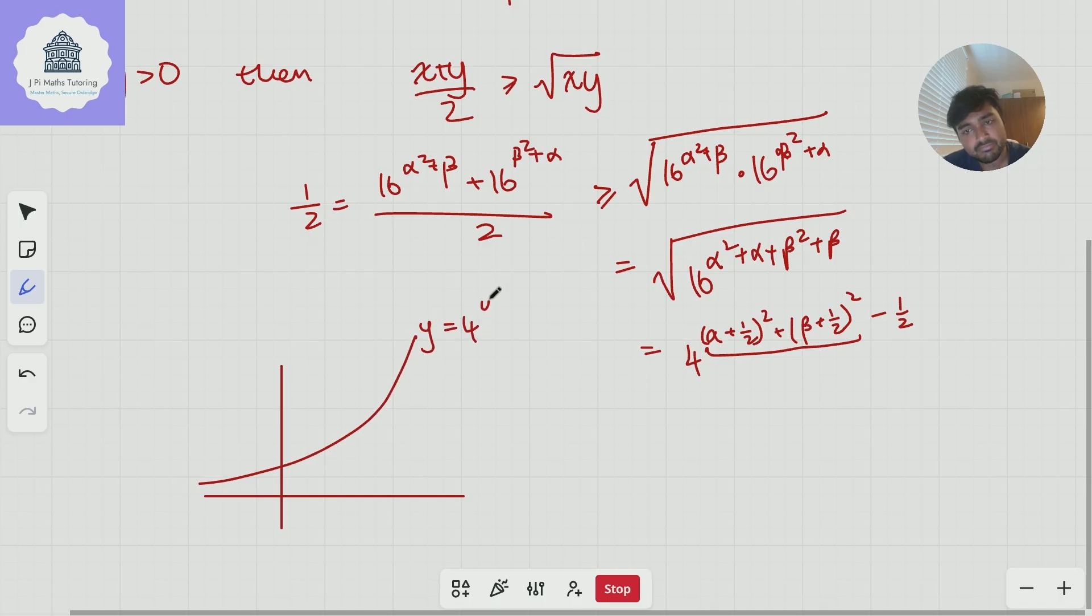So this is v = 4^u or something, but notice it's an increasing function. And so we're saying that this power here is at least negative a half, which is somewhere here. And so that means that 4 to the power of something must be at least 4^(-1/2).